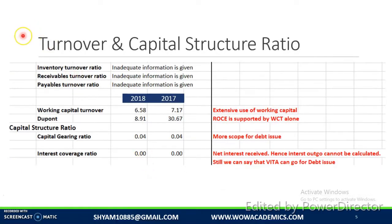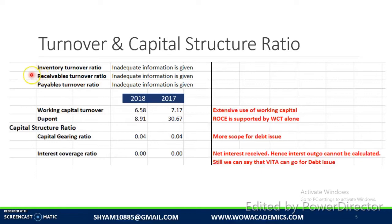Here we will discuss about the turnover ratio and capital structure ratio. We are unable to compute inventory turnover ratio, receivables and payables ratio, because for inventory we need cost of sales which is not available. For receivables we need credit sales, and for payables we need credit purchases — those are also not available.